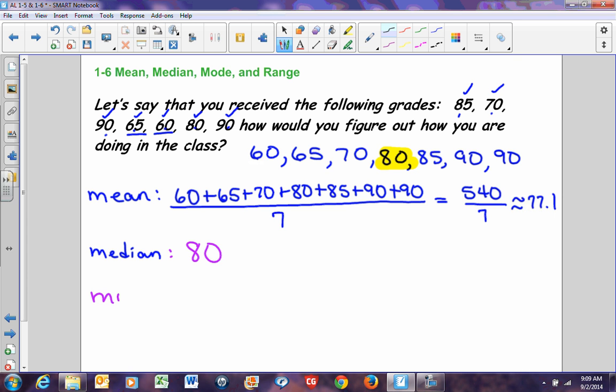My mode is the number that occurs most often. I have one number that occurs most often, and it's 90, so my mode is 90. My range is the difference between my highest number, 90, and my lowest number, 60, so my range is 30.